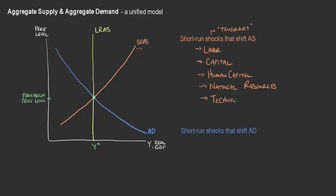The last major shock we see with short-run shifts in aggregate supply is technology. Some big technology change, like the internet, that connects individuals and businesses in a way that allows them to increase productivity — that is certainly a shift that would move the short-run aggregate supply curve to the right, allowing firms to produce much more at any given price level. The exact opposite of these things would shift it to the left.